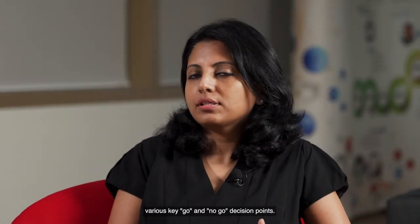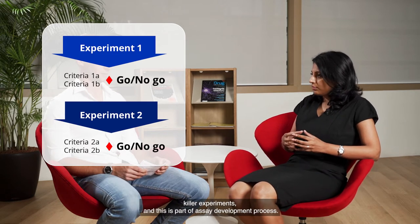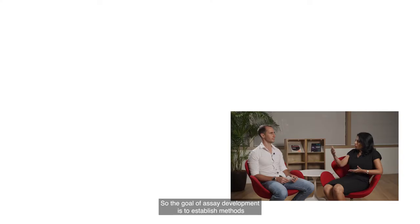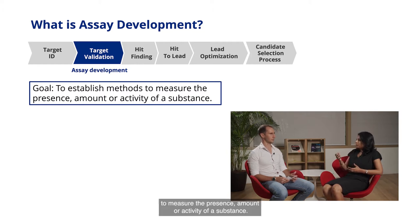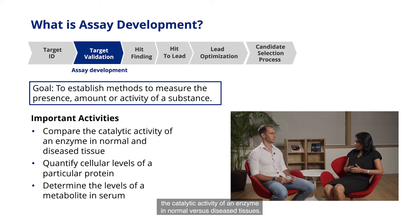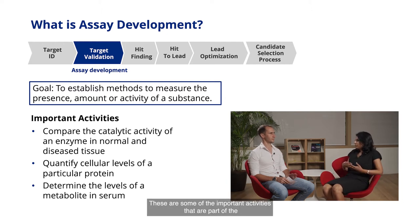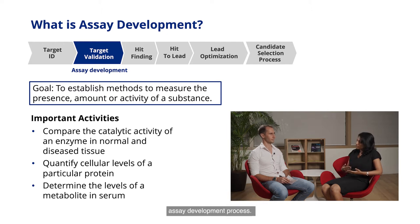So how does one measure the biological activity of the target and assess the effects of modulating function? Drug discovery is a process that goes through various key go and no-go decision points. We need to develop high quality killer experiments and this is part of the assay development process. The goal of assay development is to establish methods to measure the presence, amount, or activity of a substance. Some of the important activities include comparing the catalytic activity of an enzyme in normal versus diseased tissues, quantifying the cellular levels of a particular protein, and measuring metabolites in serum and plasma.